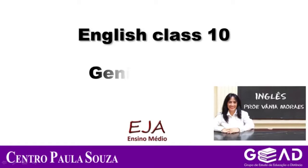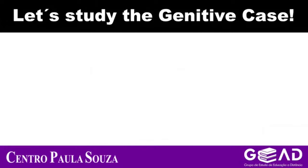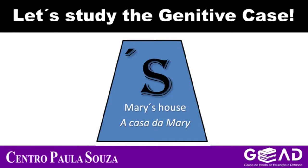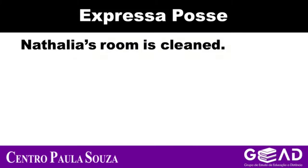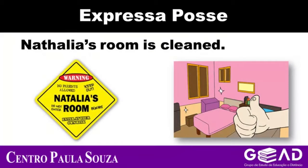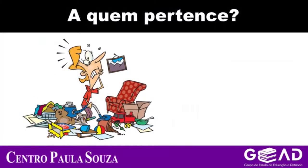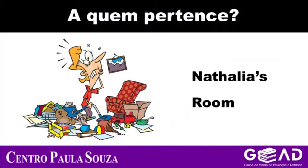Genitive case. Welcome to our class number 10. Let's study the genitive case — ou seja, o caso genitivo. O caso genitivo expressa posse. Example: 'My daughter's room is clean.' O quarto da minha filha está limpo. É usado basicamente para mostrar que algo pertence ou está associado a alguém ou algum elemento. Look,